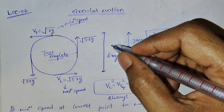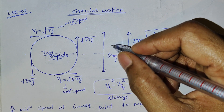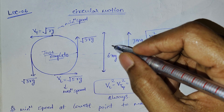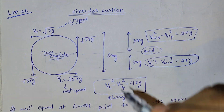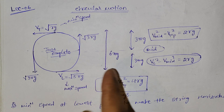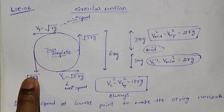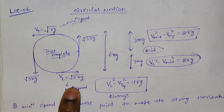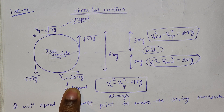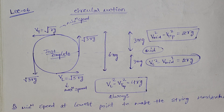This is lecture number six of circular motion. This is the last lecture of circular motion. We started vertical circular motion in the last class, and in this part we will learn some other concepts, see questions based on it, and finally complete circular motion.